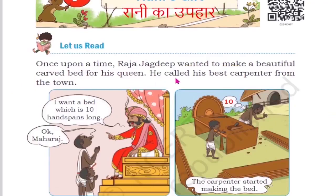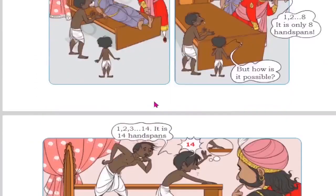Once upon a time, King Jagdeep wanted to make a beautiful carved bed for his queen. राजा जगदीप अपनी रानी के लिए एक सुंदर नकाशीदार पलंग बनाना चाहते थे। Children, 'carved' means नकाशीदार - a beautifully designed bed. He called his best carpenter from the town. उसने शहर से अपने सबसे अच्छे बढ़ई को बुलाया। The rest of the story is shown through pictures.